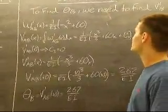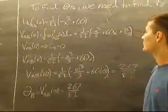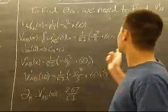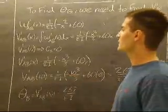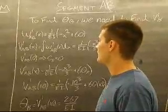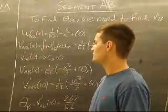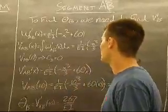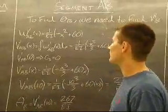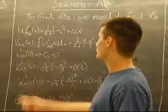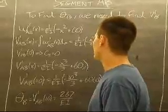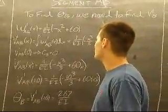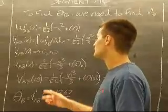The shear equation turns out to be 1 over EI times negative x cubed over 3 plus 60x plus C3. To solve for C3 we use our known shear at A which is 0, putting it into this equation giving us C3 equals 0. So our shear equation from A to B is 1 over EI times negative x cubed over 3 plus 60x.